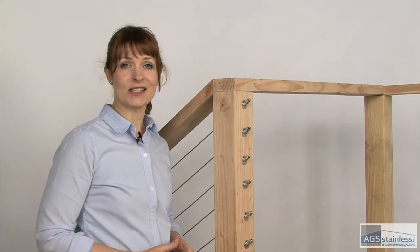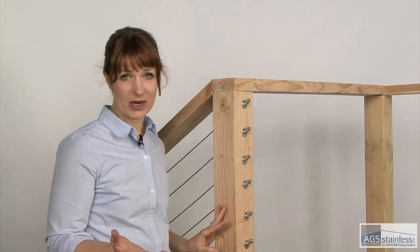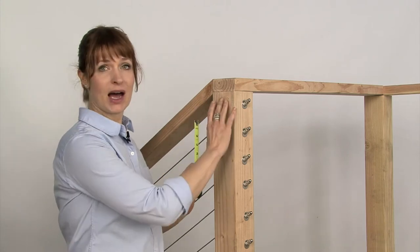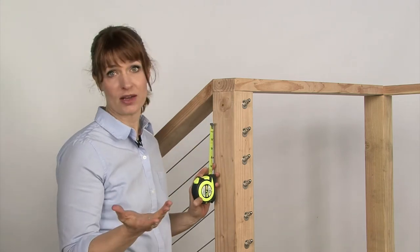To install starlights on our wooden posts, first of all, we need to take some measurements. Now, when you're measuring, make sure that you measure the same height on each post that you want to install a light on.